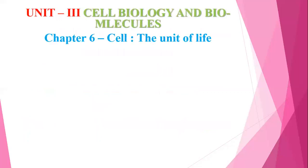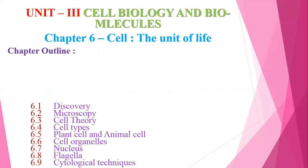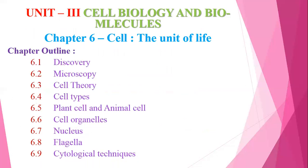Unit 3 is Cell Biology and Biomolecules. Chapter 6 is Cell: The Unit of Life. The chapter outline begins with: first, Discovery of the Cell — Robert Hooke was the first to observe cells; second, Microscope — the instrument used to view cells, how it was developed and what parts it consists of.